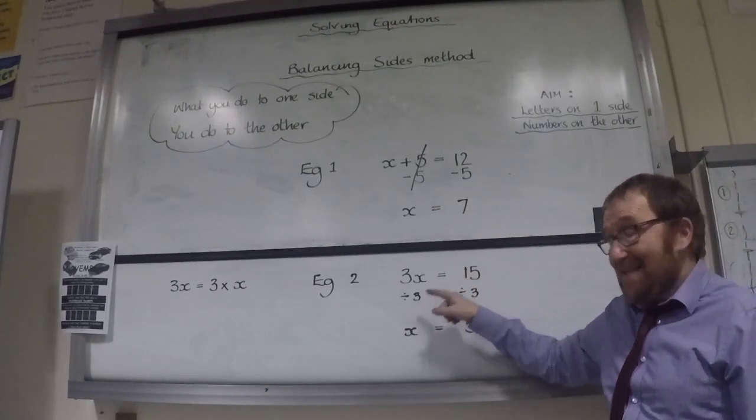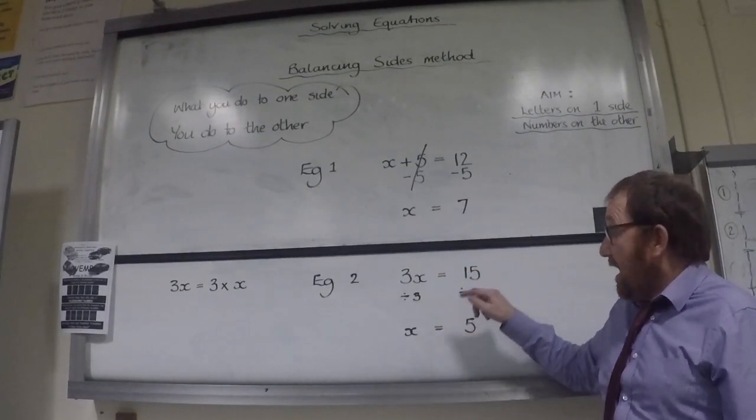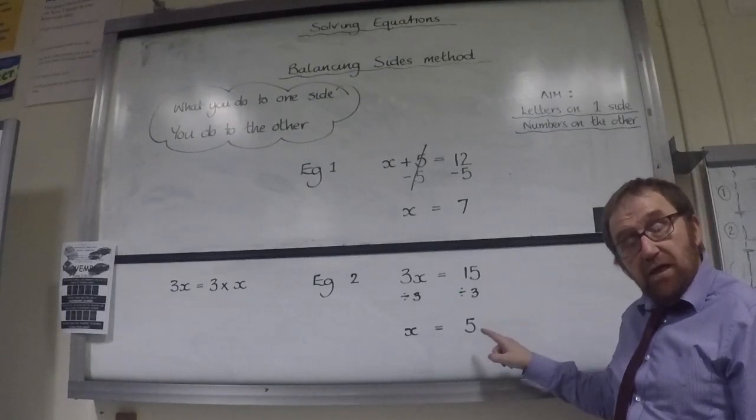What I do to one side, I do to the other. 3x divided by 3 equals x, and 15 divided by 3 equals 5.